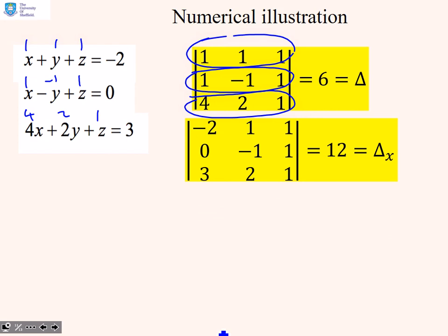If I want to solve for x, I need delta_x. I'm going to take these coefficients, the -2, 0 and 3, and put them in the first column. I've found the determinant of that, and the answer is 12. That gives me delta_x.